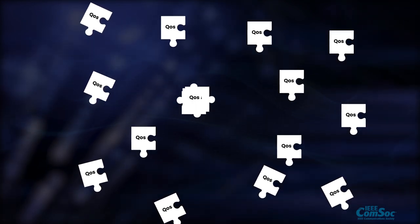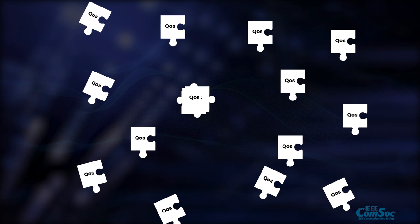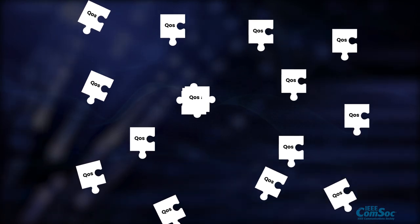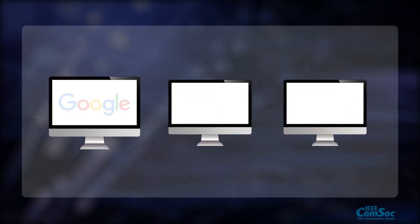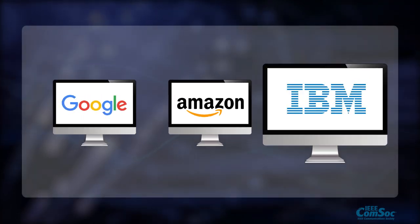Let us consider the example in this figure. We assume users generated QoS data stored by three platforms: Google, Amazon, and IBM.